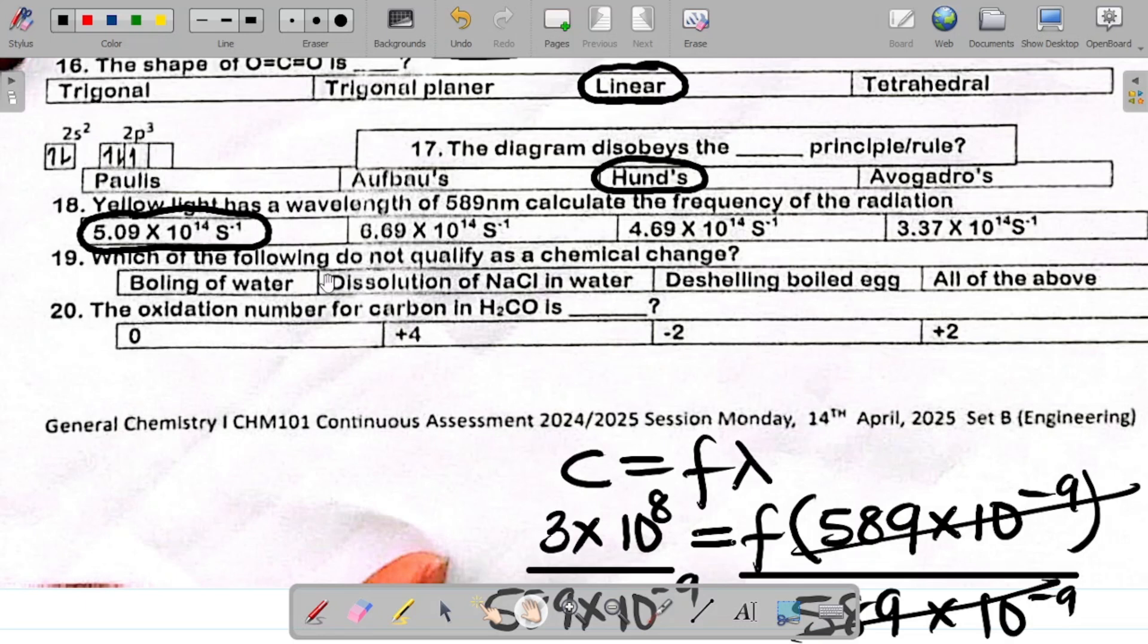Question 19 says which of the following does not qualify as a chemical change? Don't forget that a chemical change is a kind of change that is irreversible. The first thing that you have is boiling of water. Boiling of water is reversible. If you boil water, it becomes gaseous. If you keep the gas for some time, it will condense. So it's reversible. So I will circle this. So boiling of water is actually reversible, so it is not a chemical change. And hence, that's our first answer.